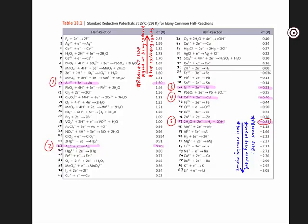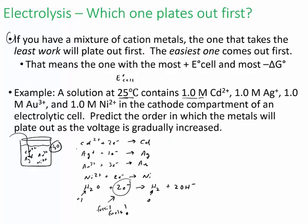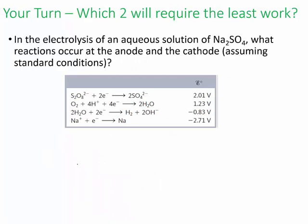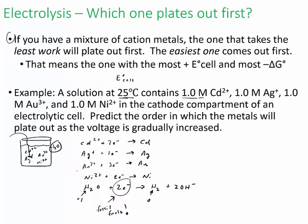Let's look at our example again. Number one was gold, then silver, then nickel, then cadmium, and this one was a negative -0.83. It says which metals plate out as the voltage is gradually increased. You wouldn't even get to this high of a voltage yet before water starts being reduced.